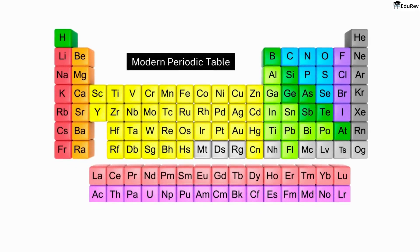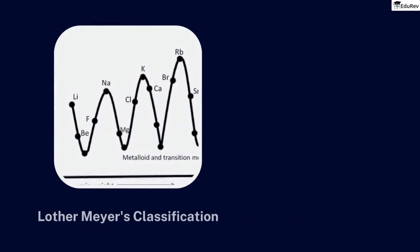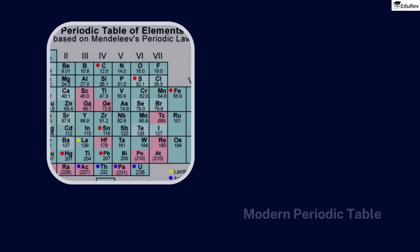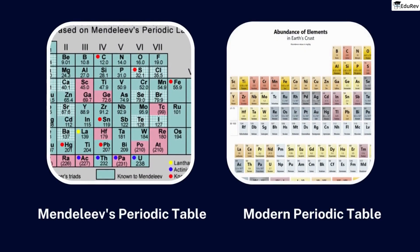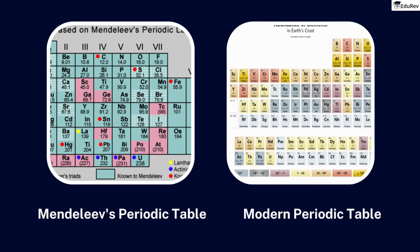The modern periodic table has become an essential tool for scientists, educators, and students around the world to understand the properties and behavior of the elements. It emerged from the work of several scientists over several decades, starting with Dobereiner's triads and Newlands' law of octaves, followed by Meyer's classification. Finally, Mendeleev combined all these ideas to develop the first version of the periodic table we recognize today, which predicted the existence of undiscovered elements.